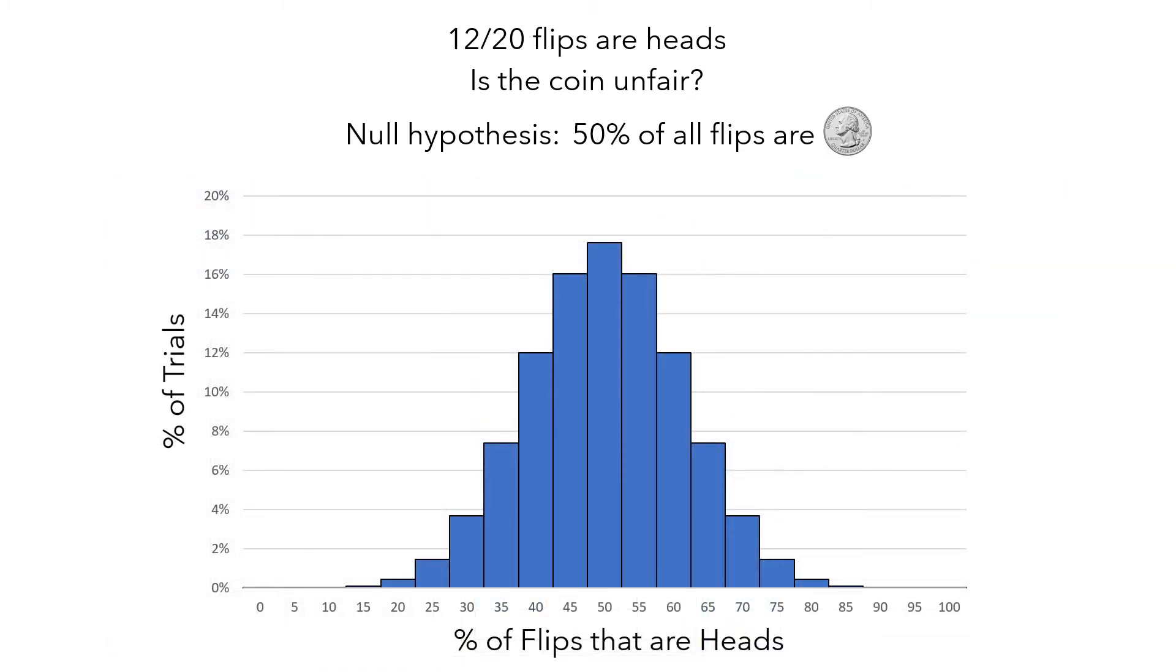Then we would look at the resulting sampling distribution, and use this sampling distribution to compute a p-value, which would let us draw a conclusion about our null hypothesis.